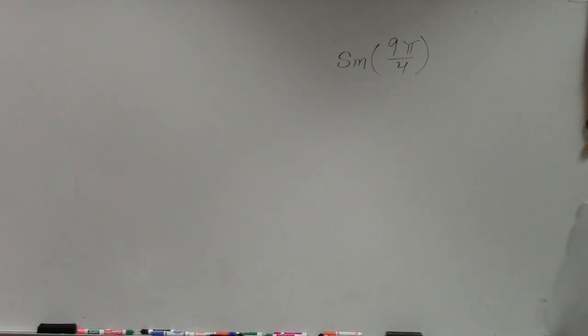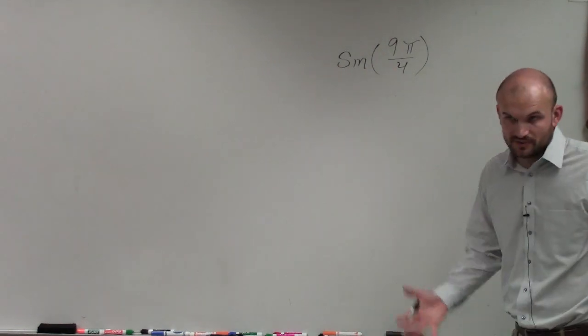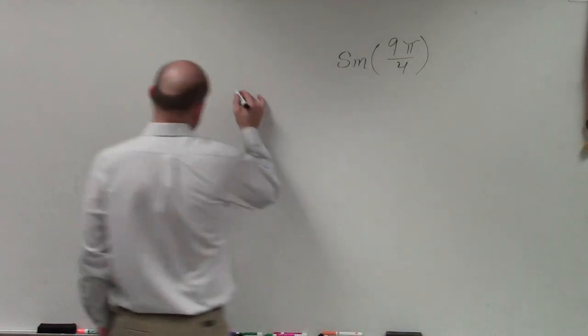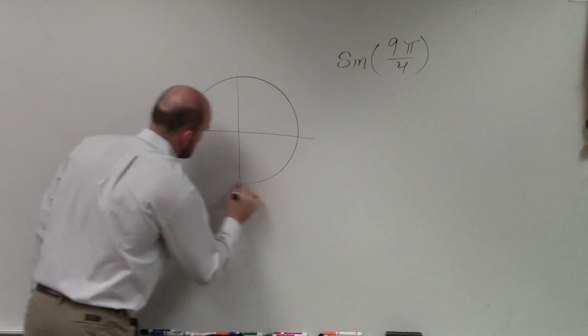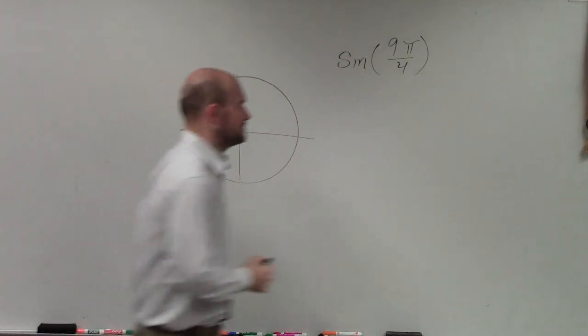The first thing we need to do in evaluating sine of 9π over 4 is understand where exactly the angle 9π over 4 is located. Let's draw that here.